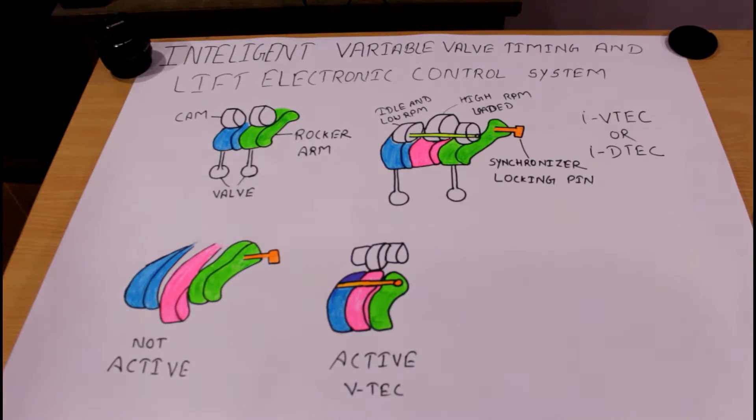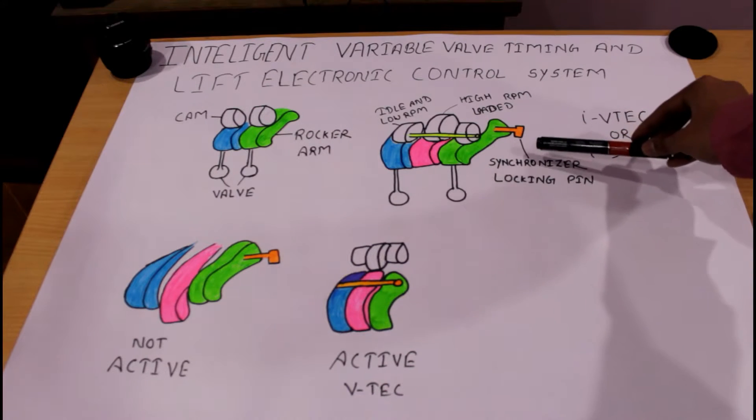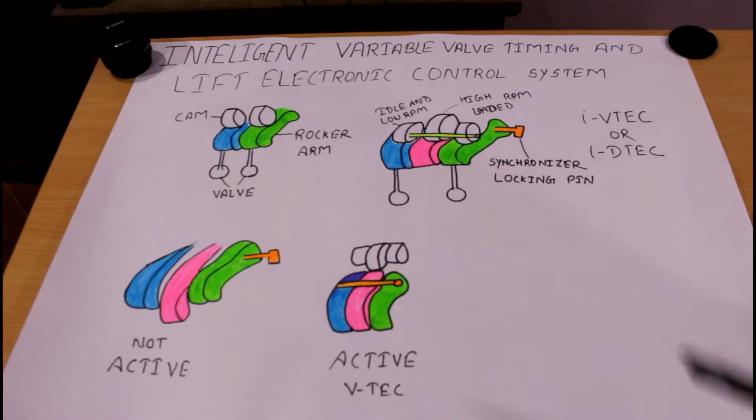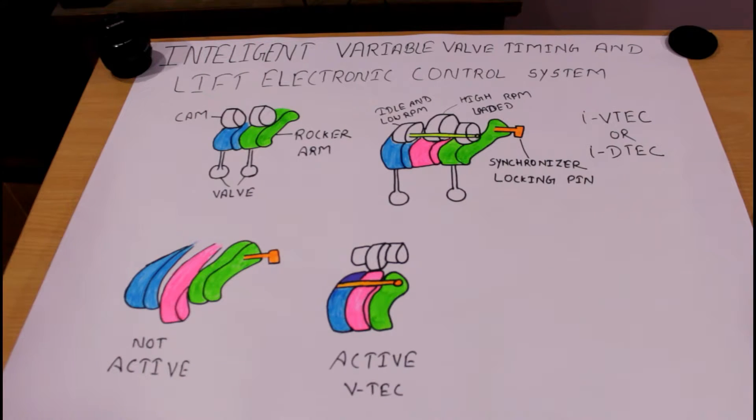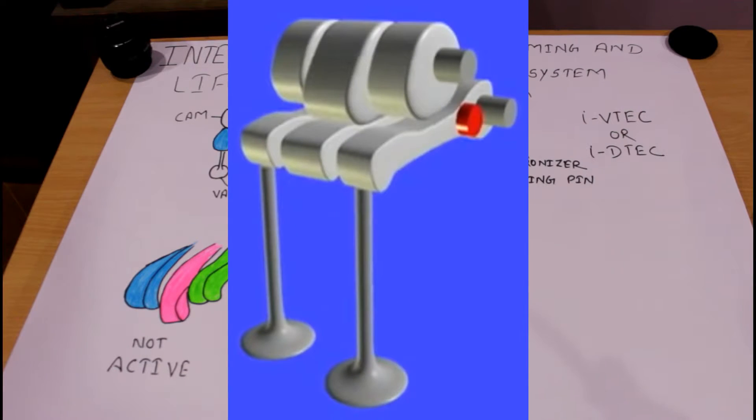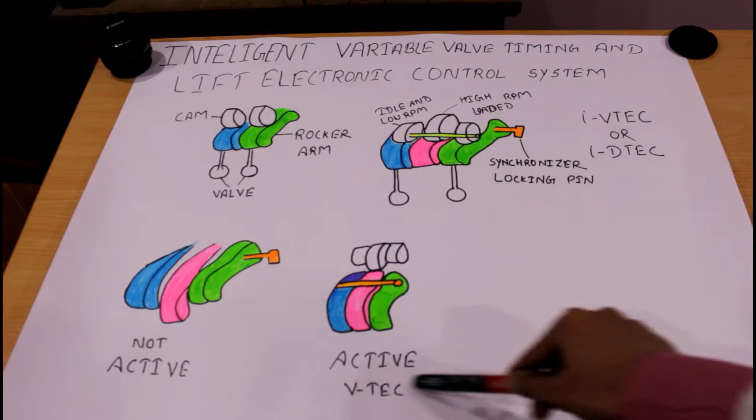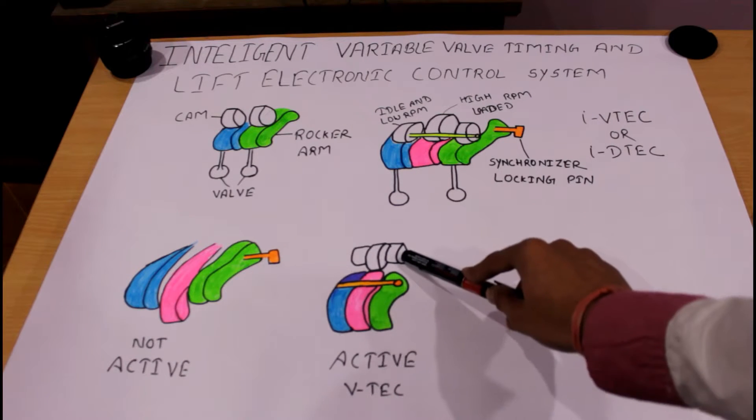But when VTEC is activated, at that time this synchronizer locking pin enters inside the three rocker arms like this, so the three rocker arms can move together - either down or up.